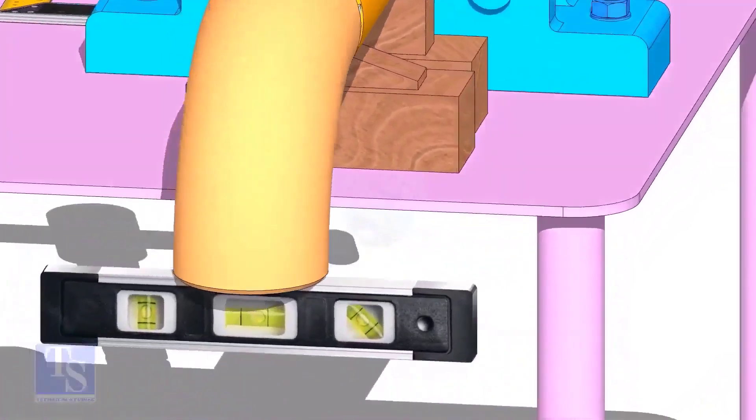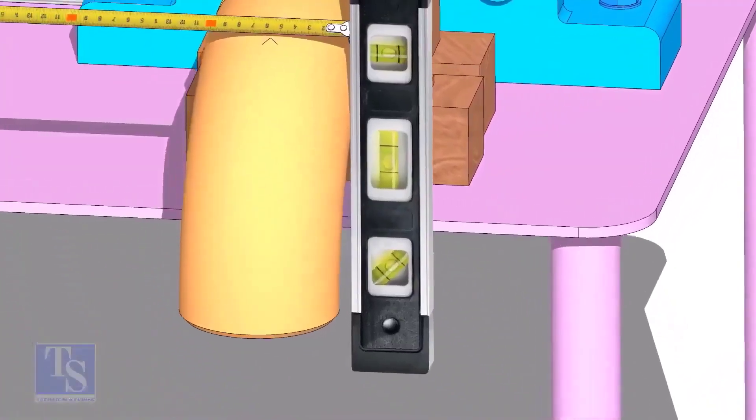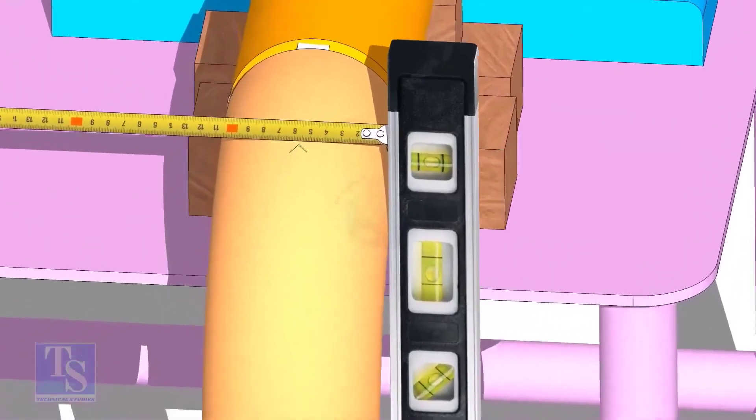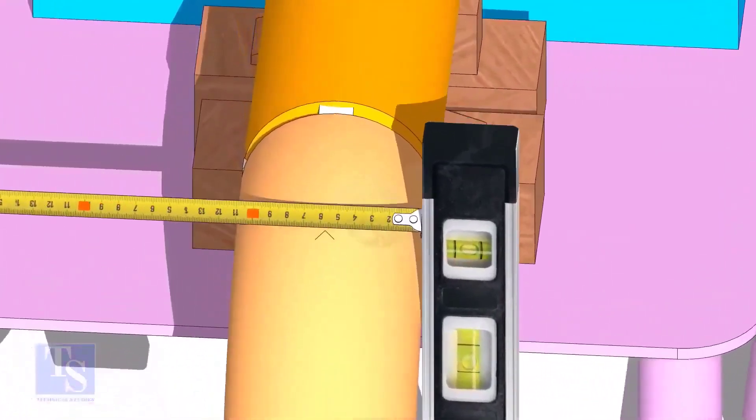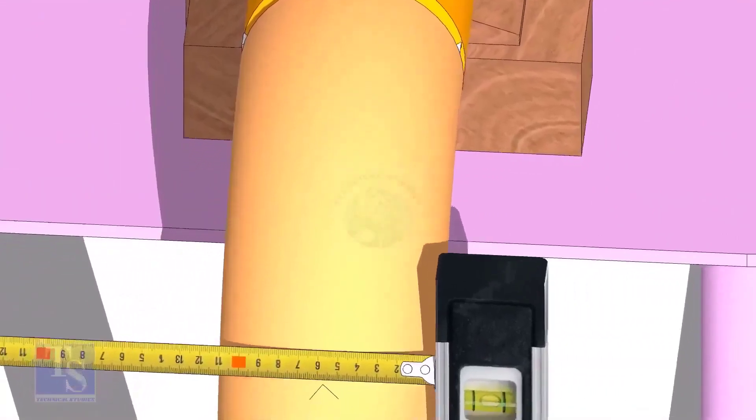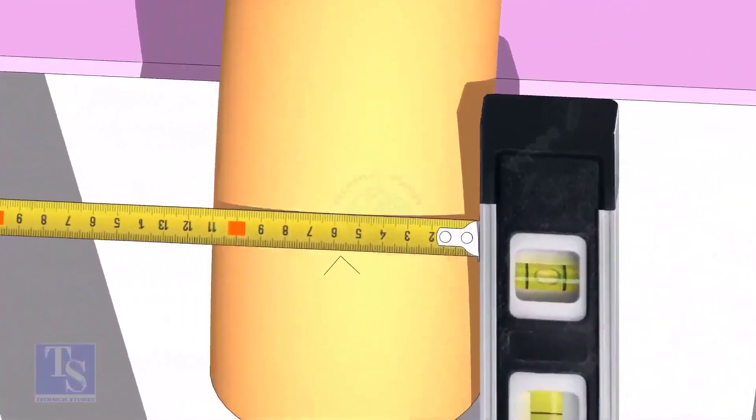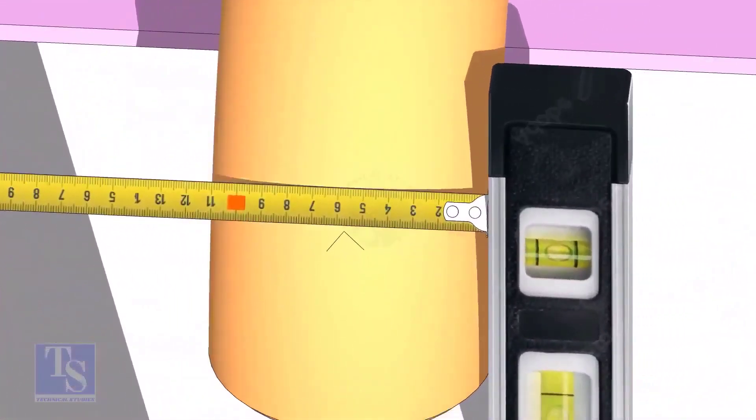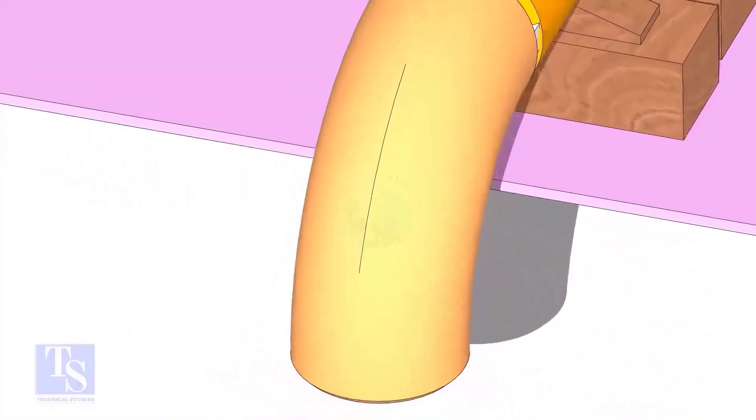Mark the center line of the elbow. OD of a four inch pipe is 114 millimeters. Hold a level bottle at the side of the elbow, vertically, and mark 57 millimeters on the elbow, at least three locations, as shown. Draw a line connecting these marks.